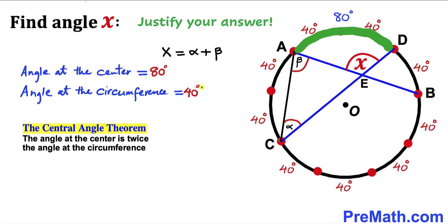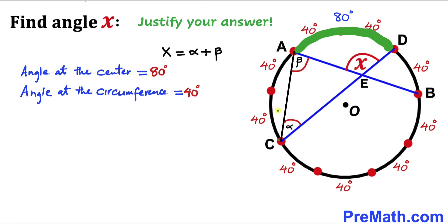That is going to be 40 degrees. And this angle at the circumference is alpha. So therefore alpha turns out to be 40 degrees.